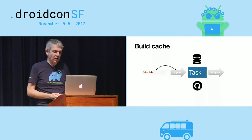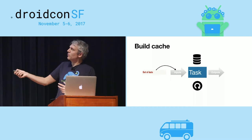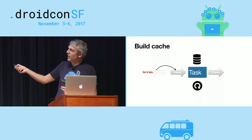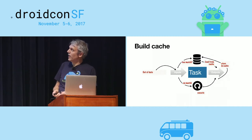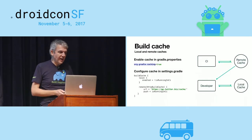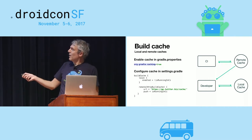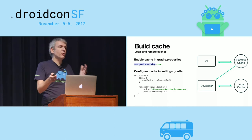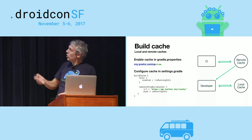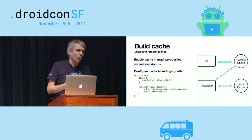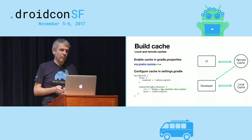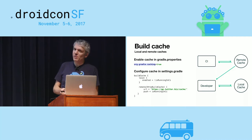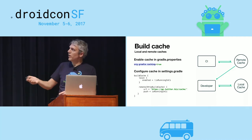When Gradle considers a task out-of-date, it uses input/output information to calculate a key from the inputs, then asks the build cache for output matching those inputs. If not found, it executes the task and stores the output in the cache; otherwise it retrieves output from the cache. A typical setup: Gradle ships with a local cache out of the box, very helpful when switching branches. A remote cache is available where developers only read, and CI — with a more controlled environment — writes to the remote cache. This is very effective for accelerating both CI builds and developer builds. You need to enable it for now; in a future version it will be enabled by default.